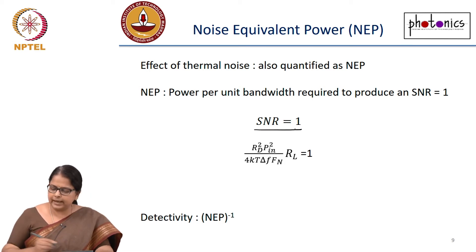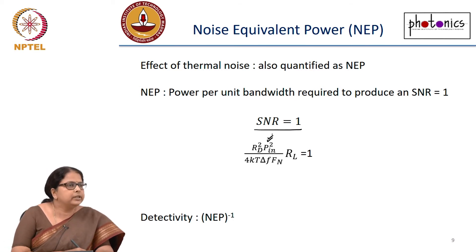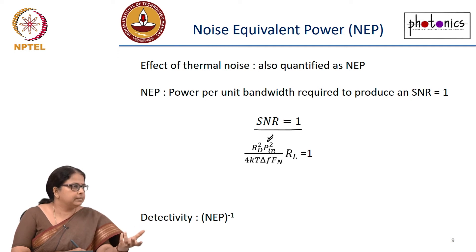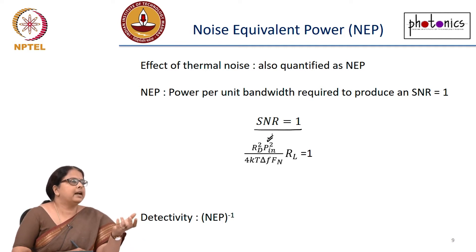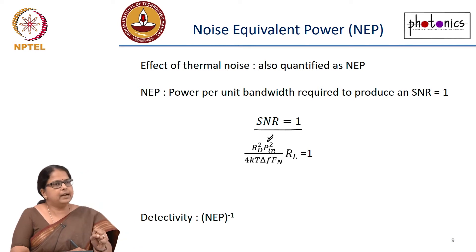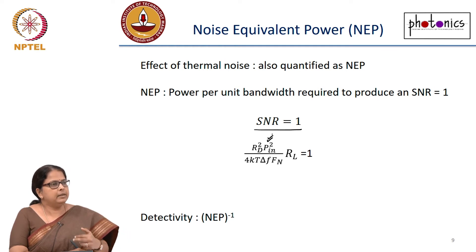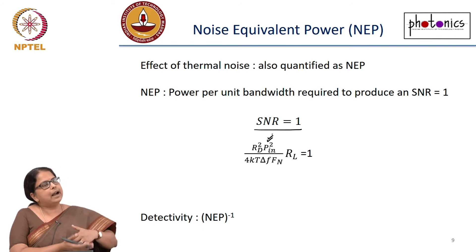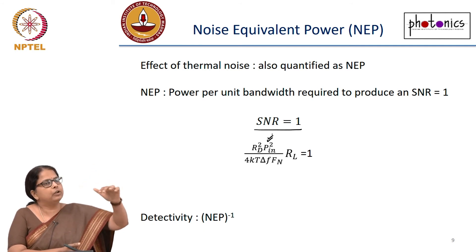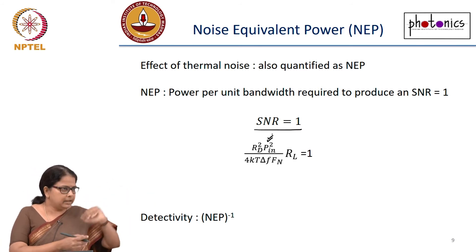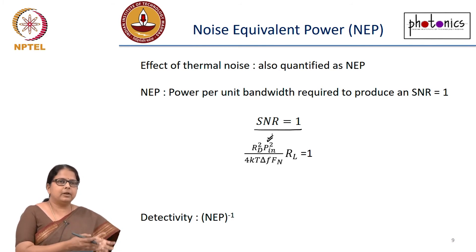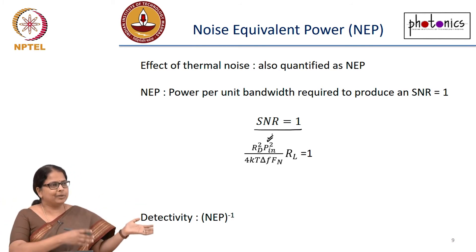NEP is the power per unit bandwidth required to produce an SNR of 1. So to get an SNR of 1, what optical power do you need to put into the detector? If the NEP is, say, 100 nanowatts, it means putting 100 nanowatts into the system gives an SNR of 1 — signal power equals noise power, which is 0 dB. If you want 20 dB SNR, you can calculate the required power accordingly.